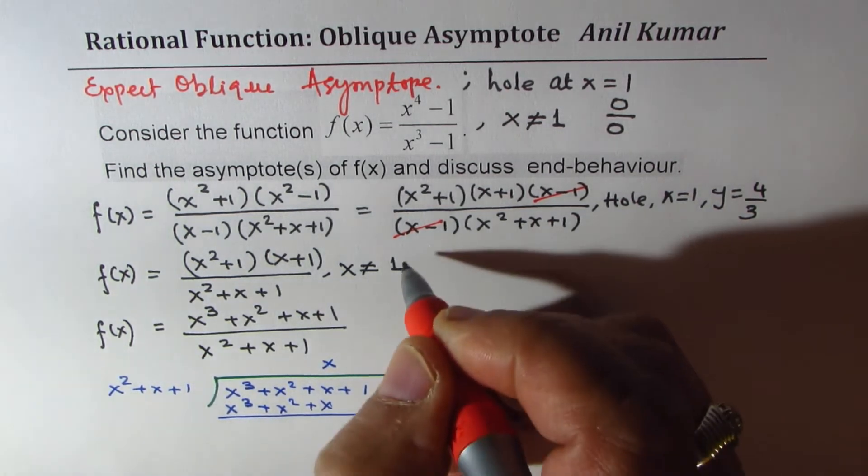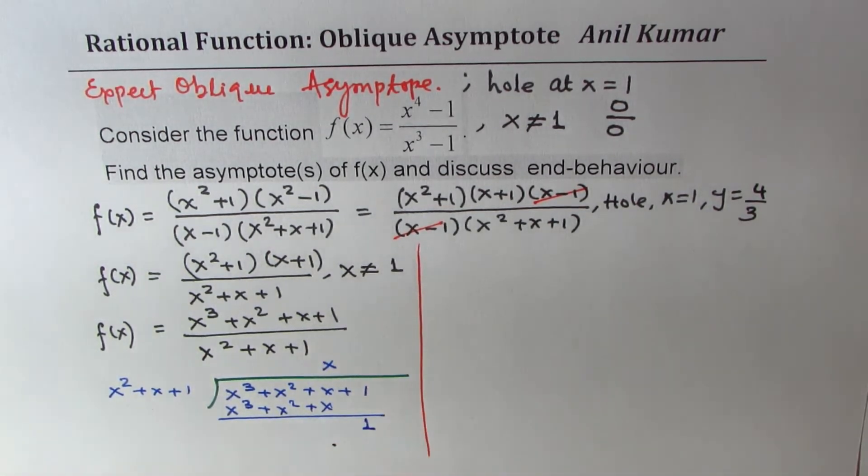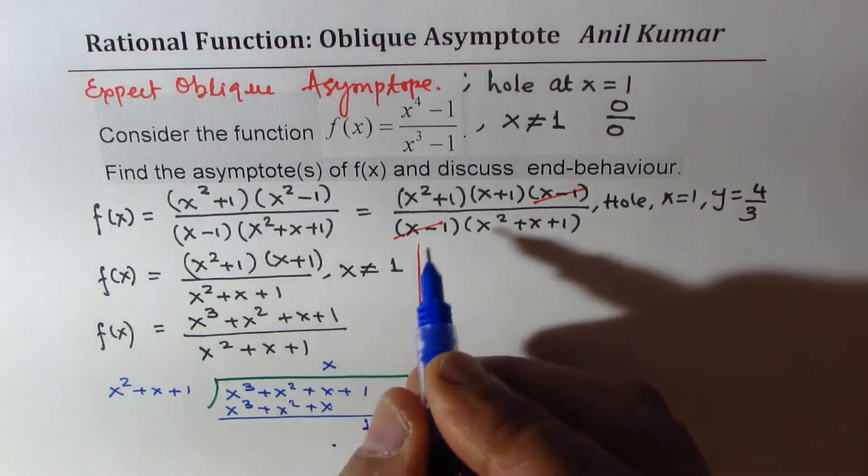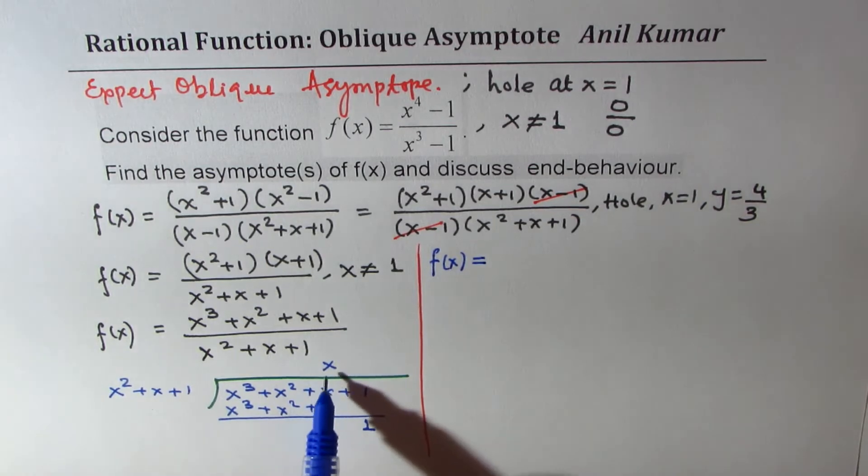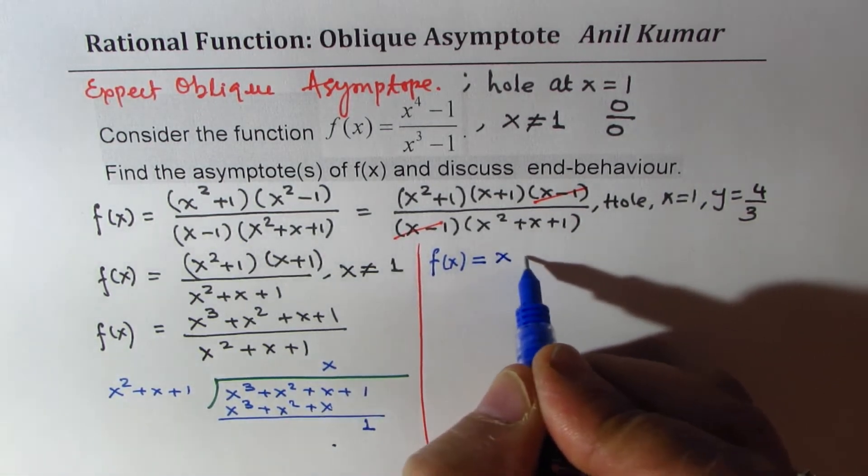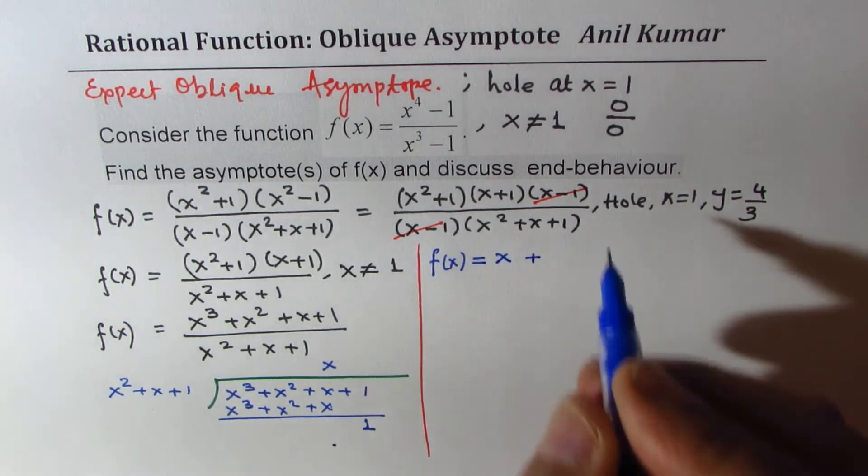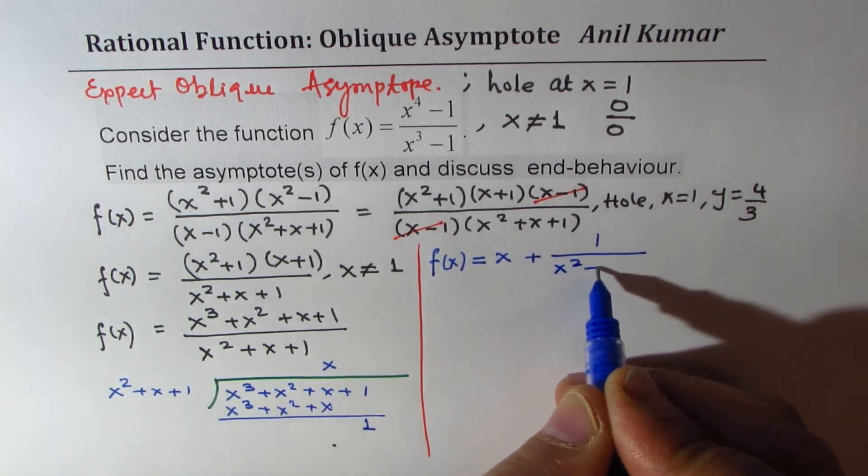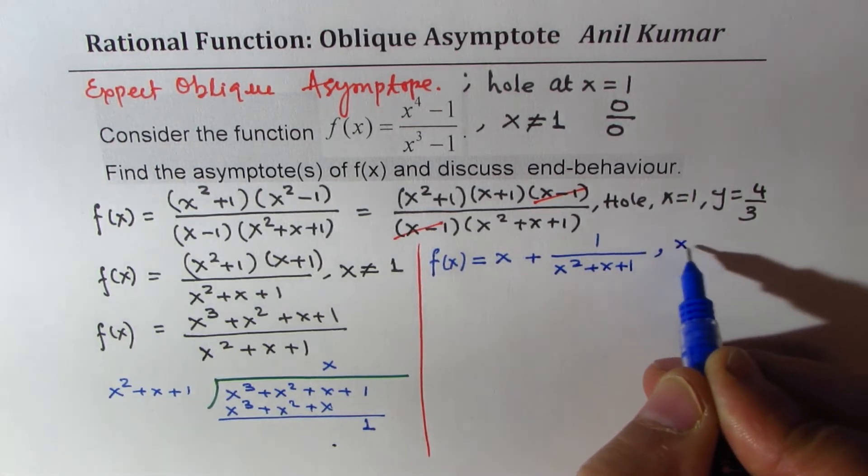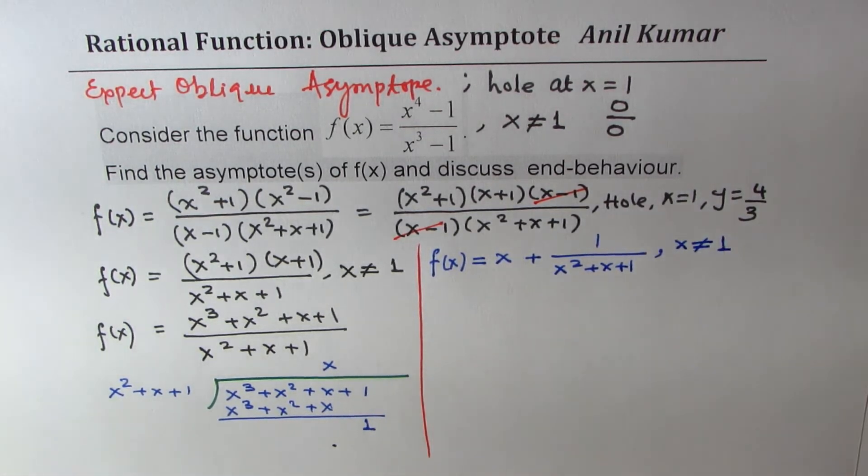So that shows that I could write my function f(x) as equal to x, the oblique asymptote, plus 1 over x squared plus x plus 1, where x is not equal to 1. Perfect.